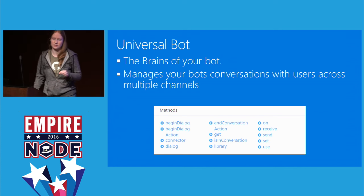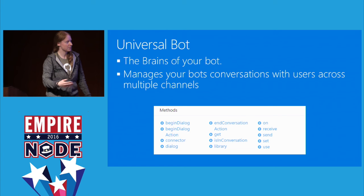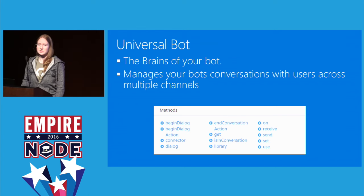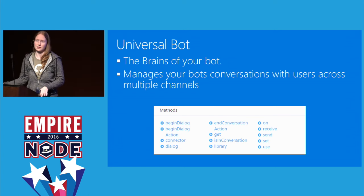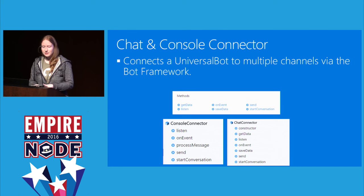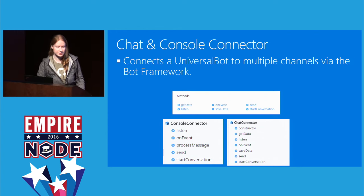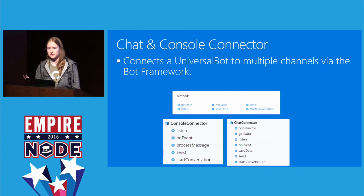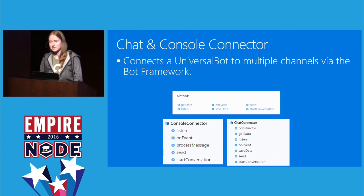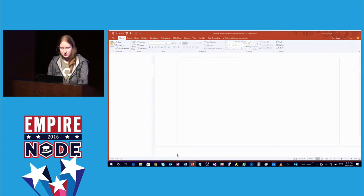The brains of your bot are in the universal bot. Universal manages your bot's conversation with users across multiple channels. You can begin your dialogue, begin an action, set up a connector, or end the conversation. This is all about creating a chat bot with different forms of dialogue to make it as realistic as possible. You can use either Node.js or C#. I like to build my bots in Node.js because it's more lightweight and a little faster to get through.